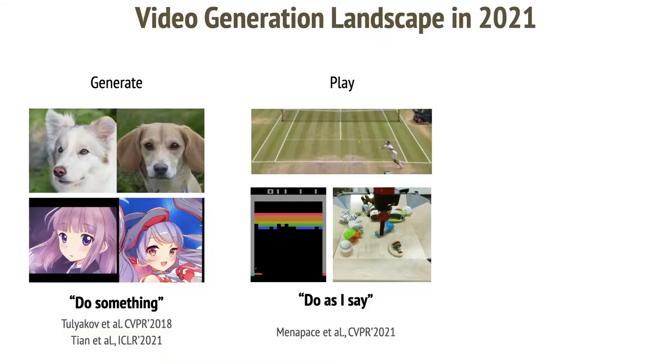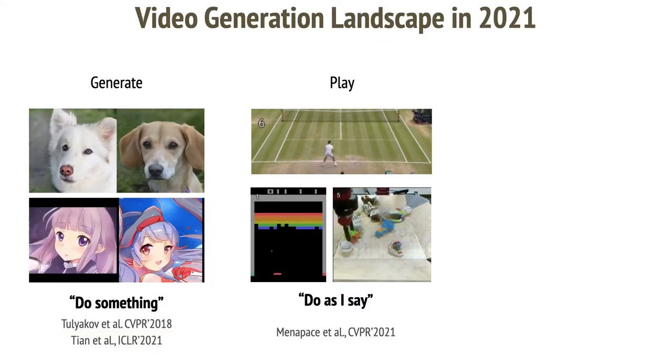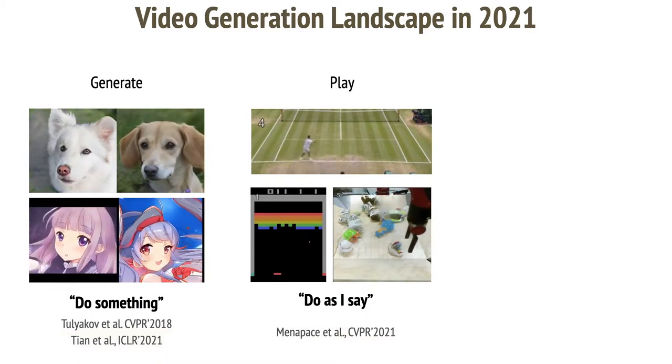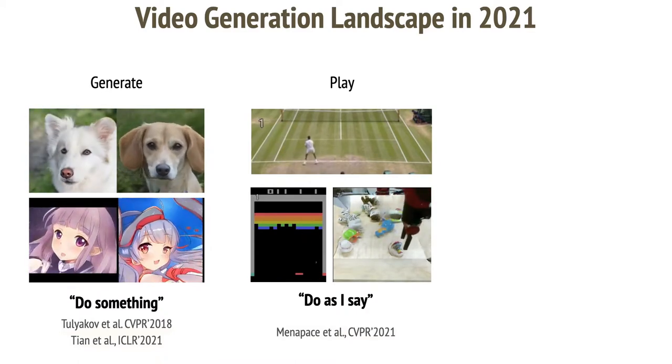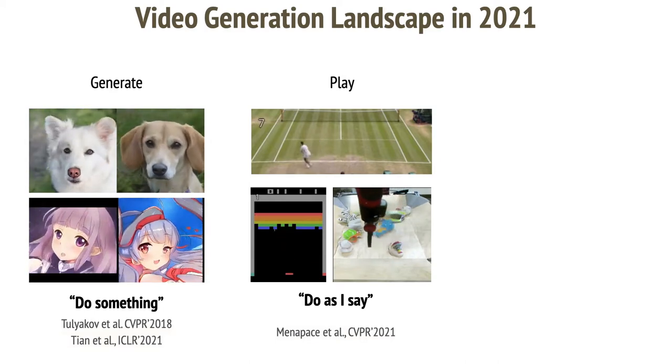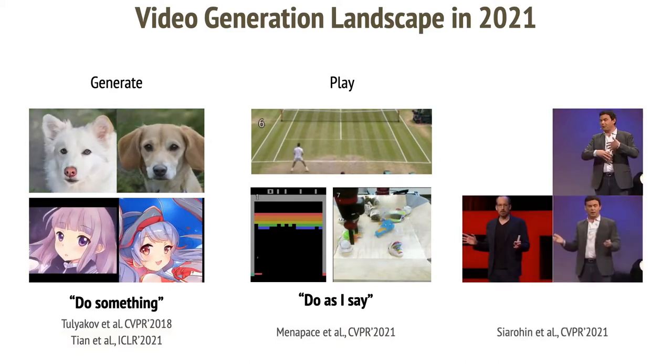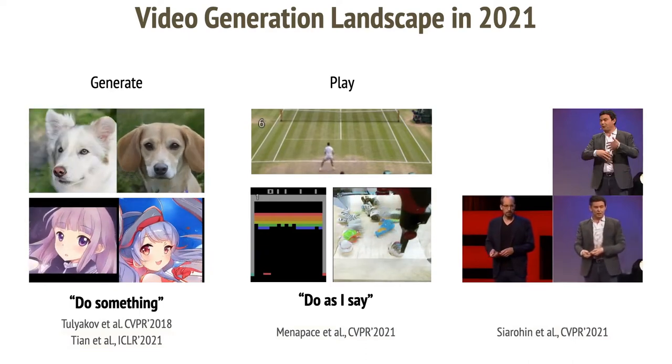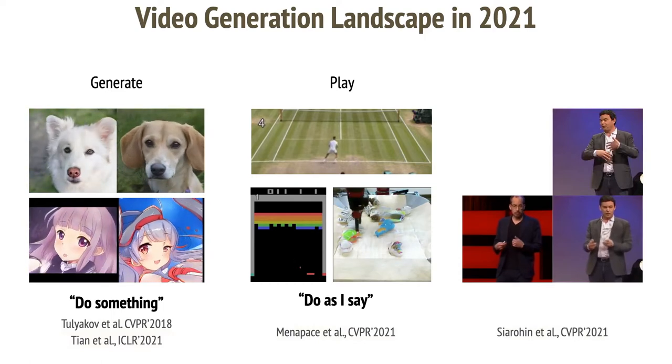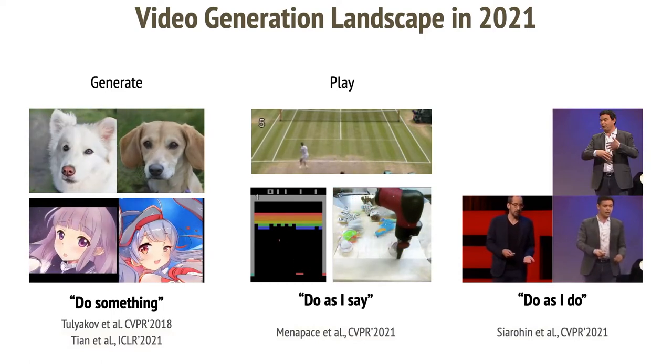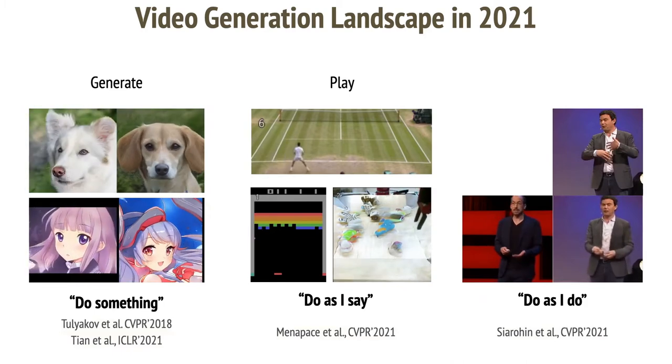Alright. In this talk, we've seen video generation models that allow us to generate motion content control videos. Then we saw the newly proposed playable video generation work, which offered more control. And now, Alexander will present several works that allow us to animate static images offering even more control over the generative process. We call this as do as I do generation, and I am happy to pass the floor to Alex.